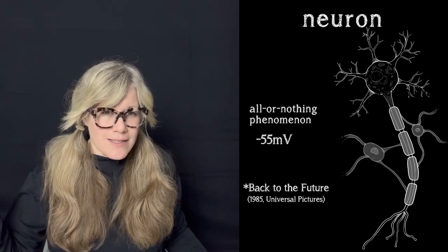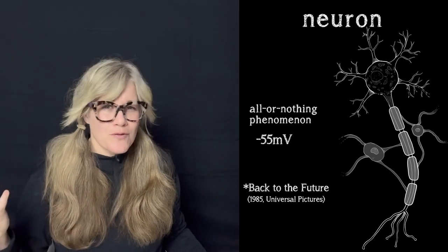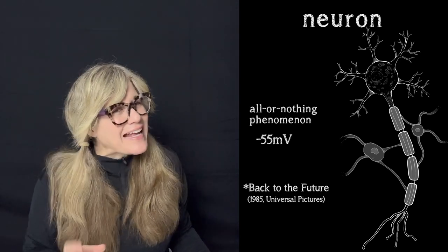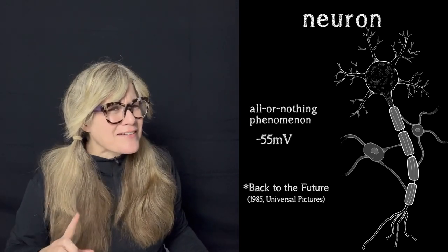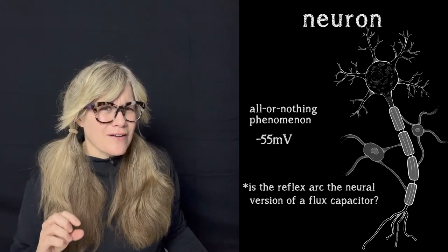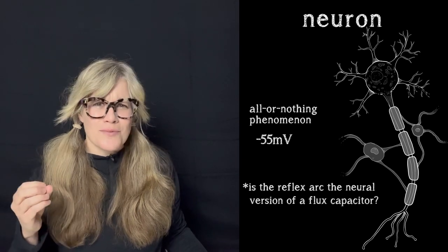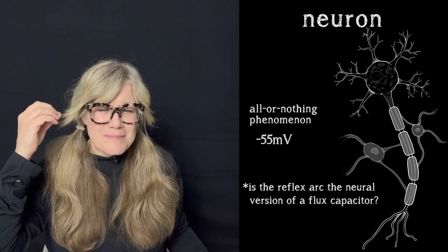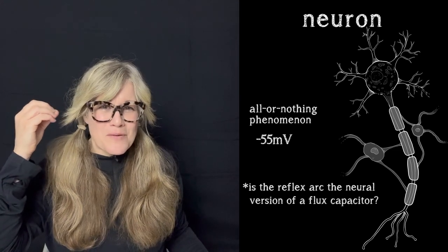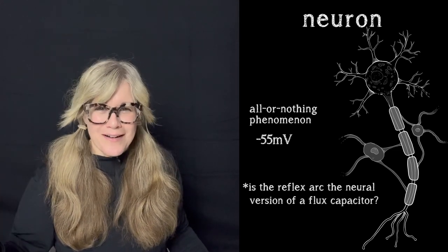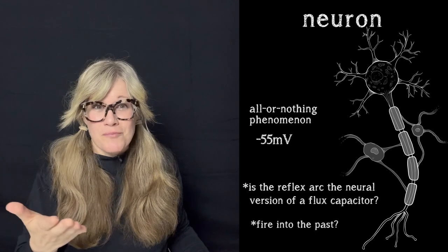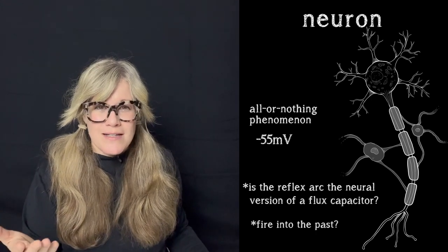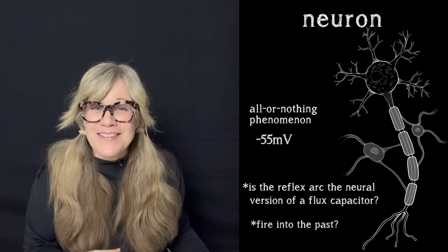It won't rocket us into another time, but you'll move a muscle, or blink. Actually, a reflex arc happens faster than the event it's responding to can register in our conscious awareness. So maybe some of our neurons do fire into the future if present time exists only at the moment we perceive it. What do you think? Leave a comment below.